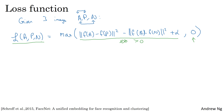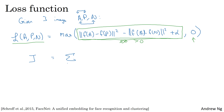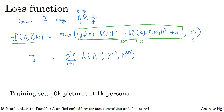By trying to minimize this loss, it has the effect of trying to send that expression to zero or below, and once it's at zero or below, the neural network doesn't care how much further negative it is. This is how you define the loss on a single triplet. The overall cost function for your neural network is summed over a training set of these individual losses on different triplets.